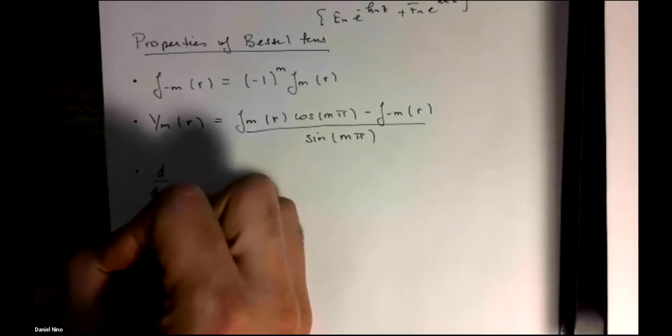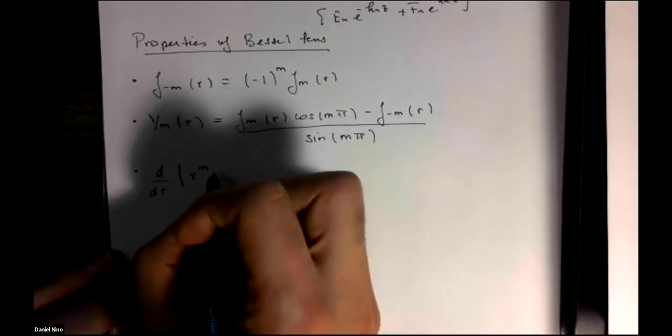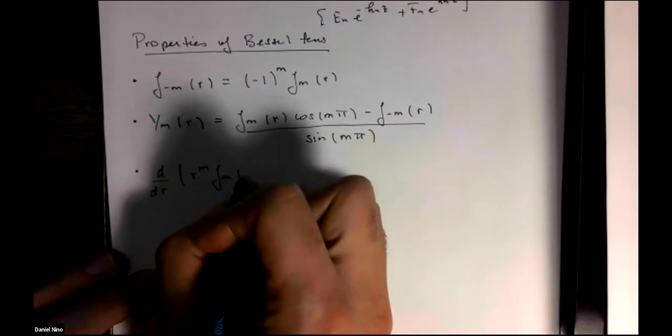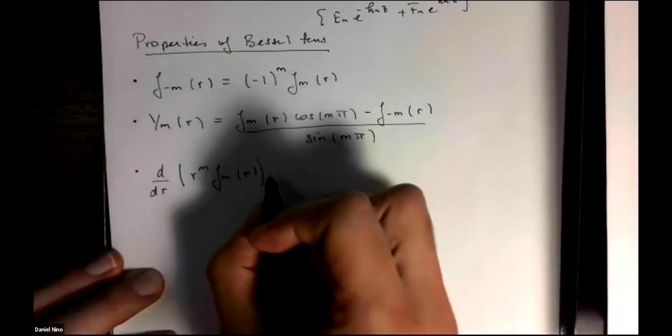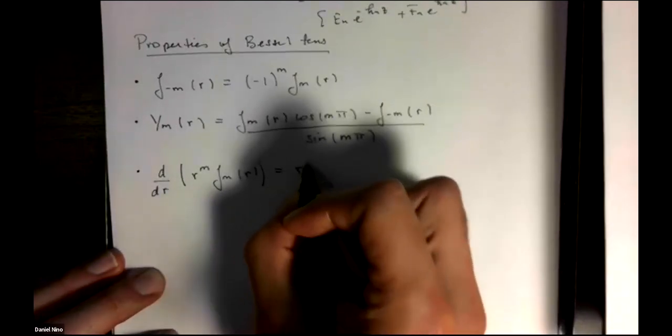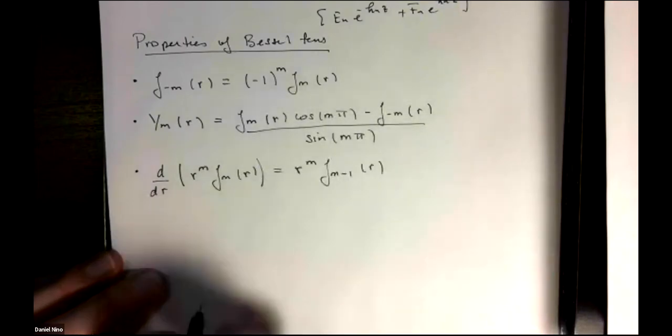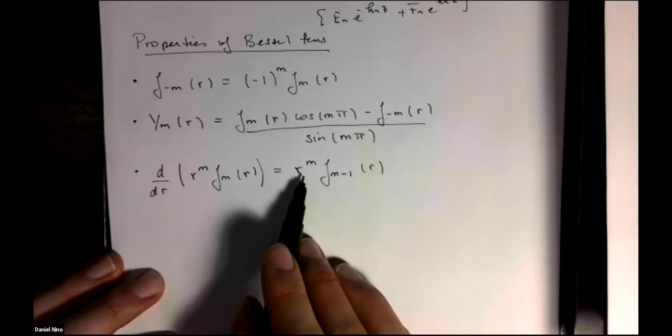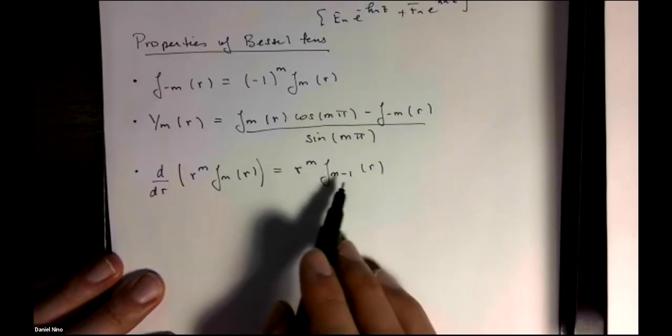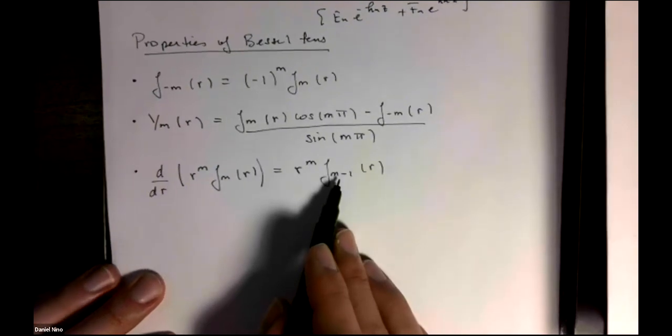The derivative of r to the m j of order m of r just results in a reduction of order of the Bessel function. So the r to the m factor remains there, and the only thing that changes is you go from order m to order m minus 1.